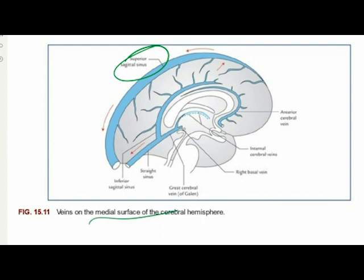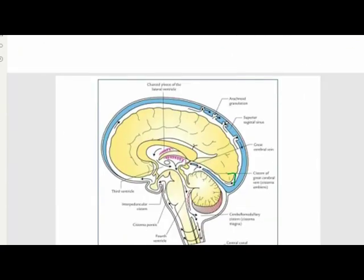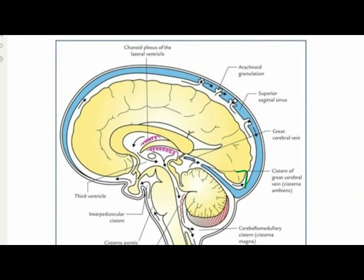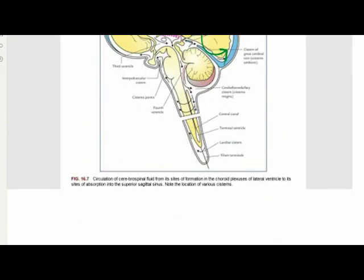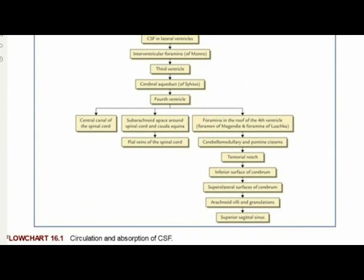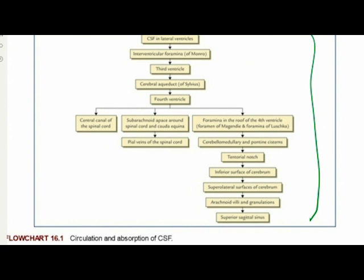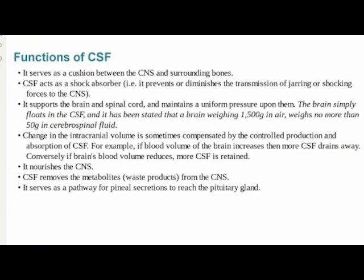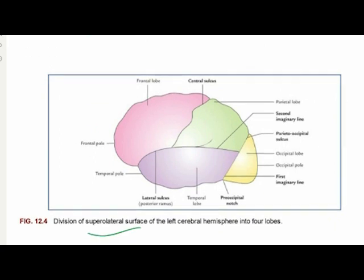The next topic is CSF circulation and secretion. A single diagram can depict this — from the site of formation in the choroid plexus of the lateral ventricle to its absorption into the superior sagittal sinus. If you are running short of time, a flowchart showing circulation and absorption of CSF can also be made. You also need to remember the functions of CSF: how it nourishes, supplies metabolites, acts as a shock absorber, removes toxic metabolites, and connects pineal secretions to the pituitary gland.